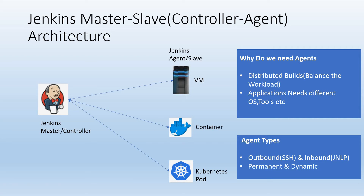What are the different types of agents we have? There are two types: one is outbound and inbound, and another is permanent and dynamic. In the outbound agent type, Jenkins will access the slave using SSH. For this SSH connection to be established from Jenkins master to Jenkins slave, this approach is used for Linux-based machines.